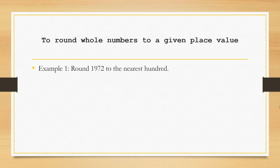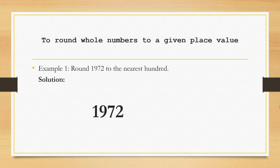Next, to round whole numbers to a given place value. For example, we're going to round 1972 to the nearest hundred. Take note class, the nearest hundred. The solution is that we're going to identify first the given place value, which in this case is 9.